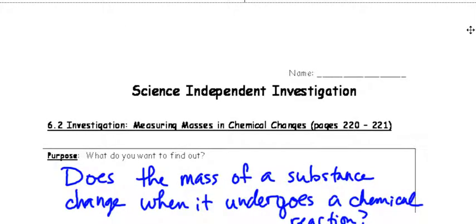Welcome back, Science 10. Next on the list is Investigation 6.2, Measuring Masses in Chemical Changes. You'll likely have to grab a textbook here. It's on pages 220 to 221, outlining exactly what the procedure is. It's a relatively easy experiment, but just looking at the procedure there, it should be a good example.